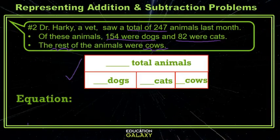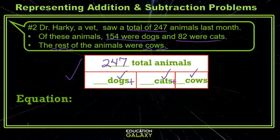Let's start with the strip diagram. Dr. Harkey saw a total of 247 animals. This total would be the sum of dogs, cats, and cows. 154 animals were dogs, 82 were cats, and the rest were cows — we don't know this number, so I'll put a question mark.